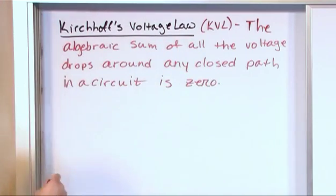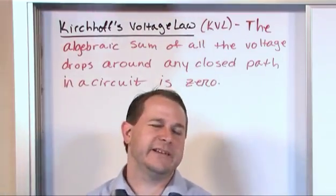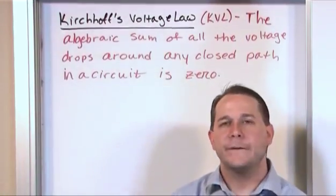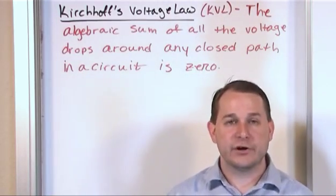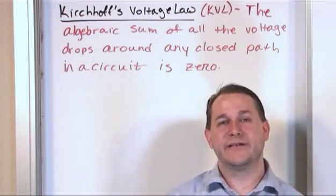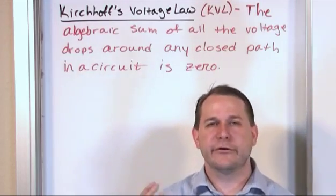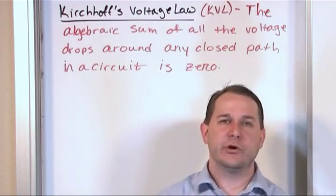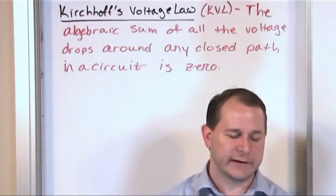It's just one sentence: the algebraic sum of all the voltage drops around any closed path in a circuit is zero. You see it has some symmetry with the current law. The current law was the algebraic sum of the currents going into or out of a node is zero. Here we have the algebraic sum of the voltage drops along any path in a circuit is zero. There's some symmetry going on there, and you'll see that the equations look similar, but the methodology is a little different to get there.